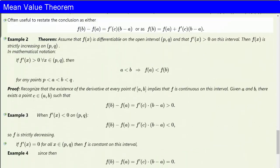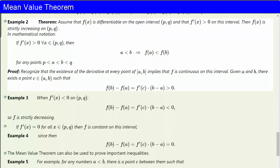The main use of the mean value theorem is proving inequalities and theoretical results. For these applications, it is often useful to restate the conclusion of the mean value theorem as either: f(b) minus f(a) is exactly equal to f'(c) times (b minus a); or f(b) equals f(a) plus f'(c) times (b minus a). In other words, multiply both sides of the original conclusion by (b minus a) for the first statement, and then add f(a) to both sides for the second.